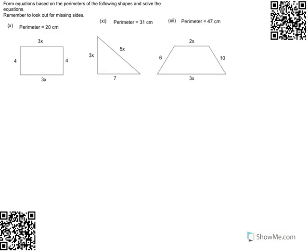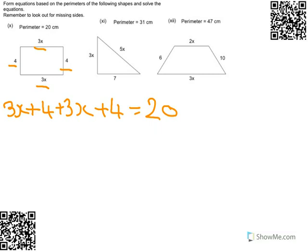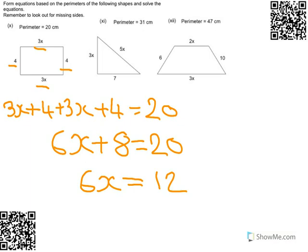Final set of questions. Let's take a look at this first one. We've got 3x, 3x and 4 and 4 on this one. And it equals a perimeter of 20. So we've got 3x plus 4, another 3x and another 4, and those 4 things make 20 centimeters. So we've formed the equation. Let's simplify it first. So there's 6x, 4 plus 4 is 8, equals 20. We've formed the equation. Now we need to solve it. So take away 8 from both sides. You get 6x equals 12, x equals 2. Done.